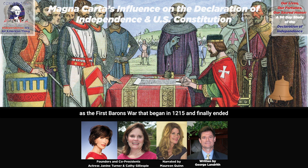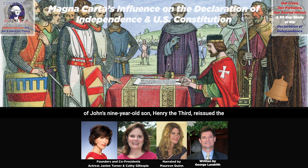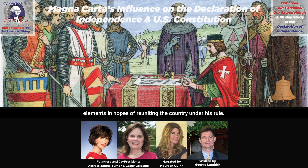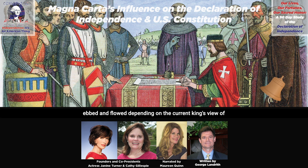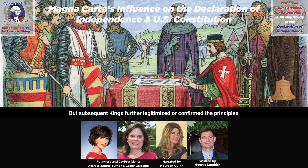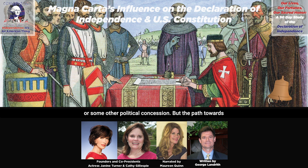Then there was a war known as the First Barons' War that began in 1215 and finally ended in 1217. After King John died in 1216, the regency government of John's nine-year-old son, Henry III, reissued the Magna Carta after having stripped out some of its more radical elements, in hopes of reuniting the country under his rule. That didn't work, but at the end of the war in 1217, the original Magna Carta's terms became the foundation for a peace treaty. Over the following decades and centuries, the importance of Magna Carta ebbed and flowed depending on the current king's view of it and his willingness to abide by its concepts. But subsequent kings further legitimized or confirmed the principles of Magna Carta, often in exchange for new taxes or other political concessions. The path towards limited government and individual rights had been planted and continued to grow.